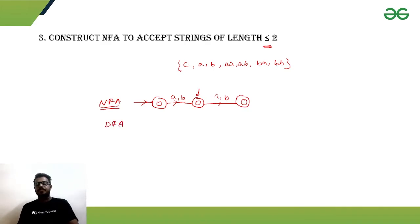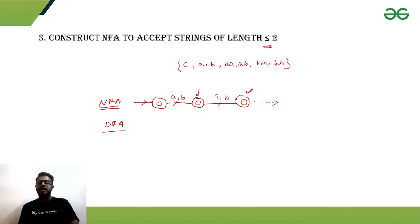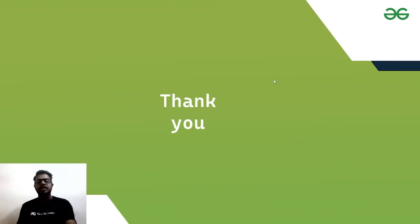For the DFA version, a dead state is required because from the final state we don't know what happens if we get a or b. In the NFA we don't explicitly handle that, but in the DFA we must define what happens given the final state and input symbols a or b — those transition rules must be present. That's the comparative analysis between DFA and NFA. If you have any queries or doubts, please raise them in the comment section. Thank you for joining.